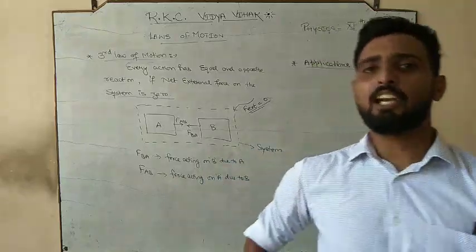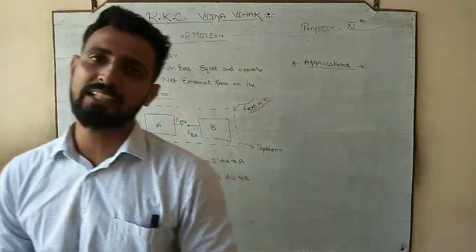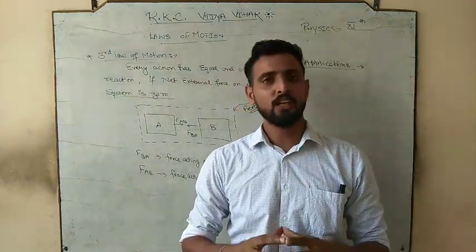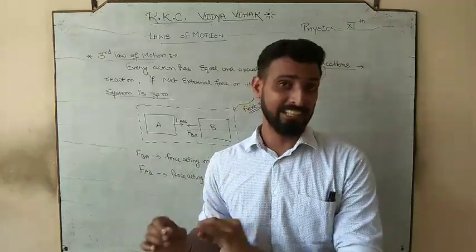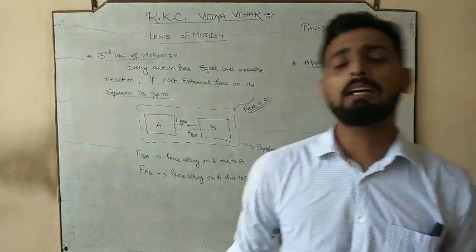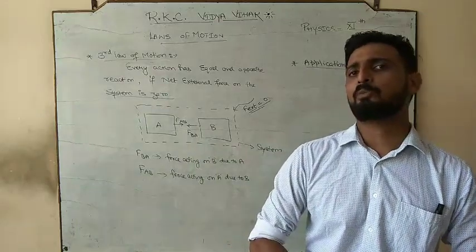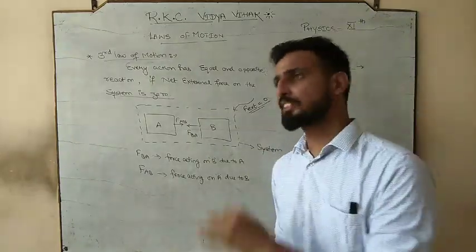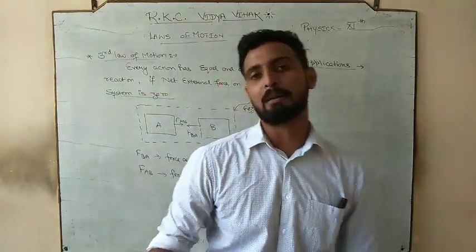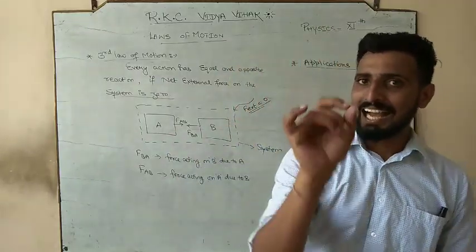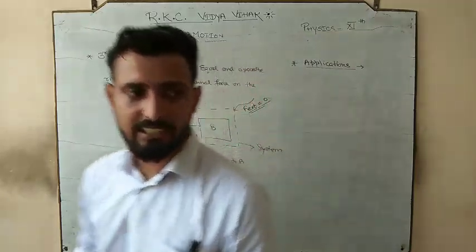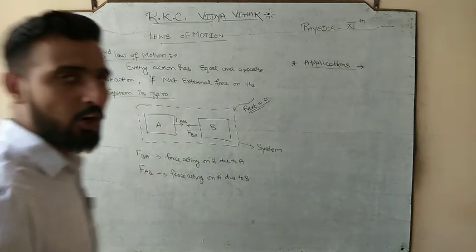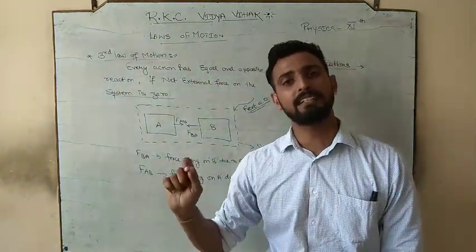This is the first law. For the second law application: force is always responsible for the rate of change of momentum. When we apply force on any body, the body changes its momentum — dp/dt — which after solving gives mass into acceleration. So if you apply force on a body, it will accelerate. Someone might ask: I applied force on a wall but it didn't move. Let me clarify the definition of force: it is that external agency responsible for changing the state, changing the shape, and changing the direction.